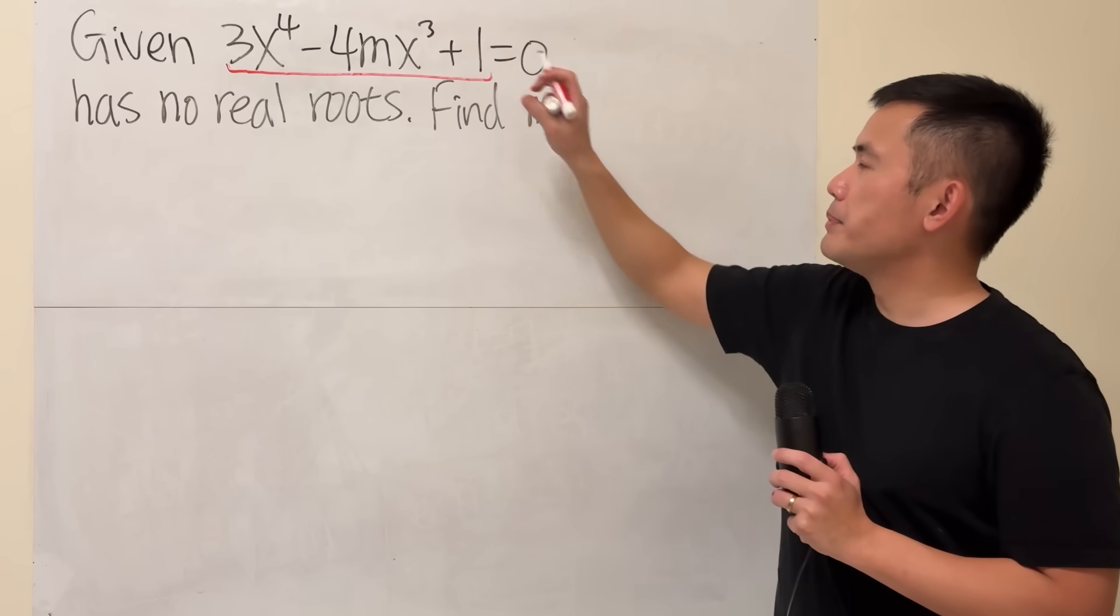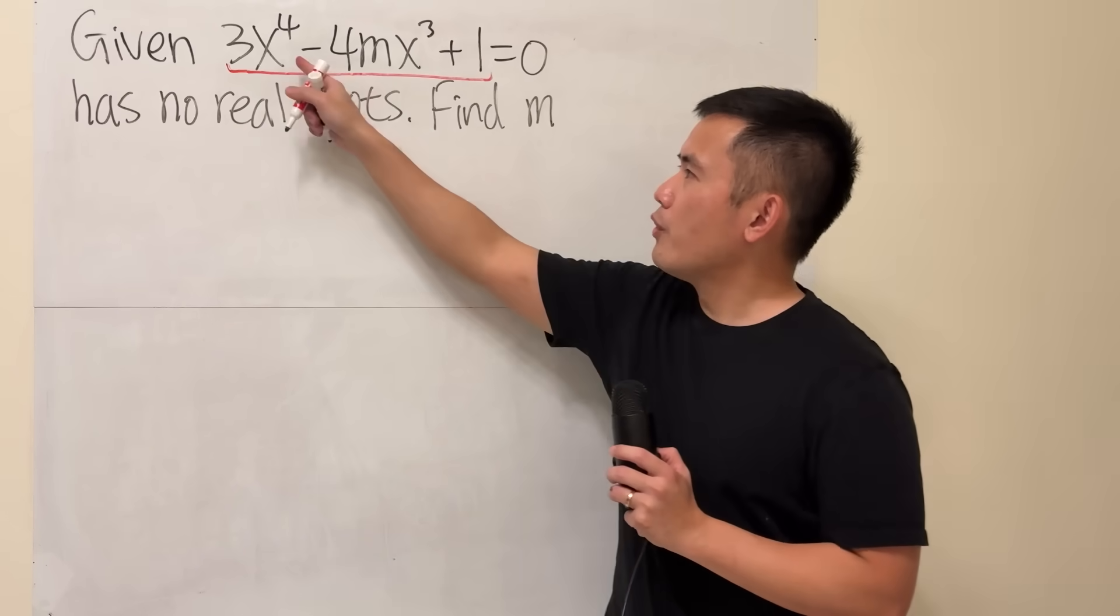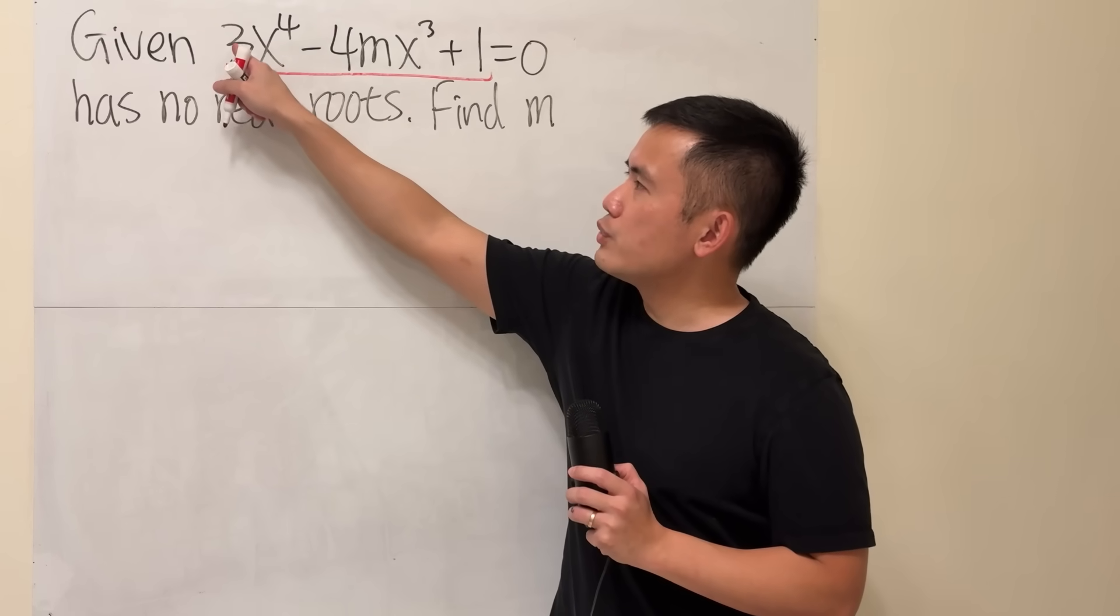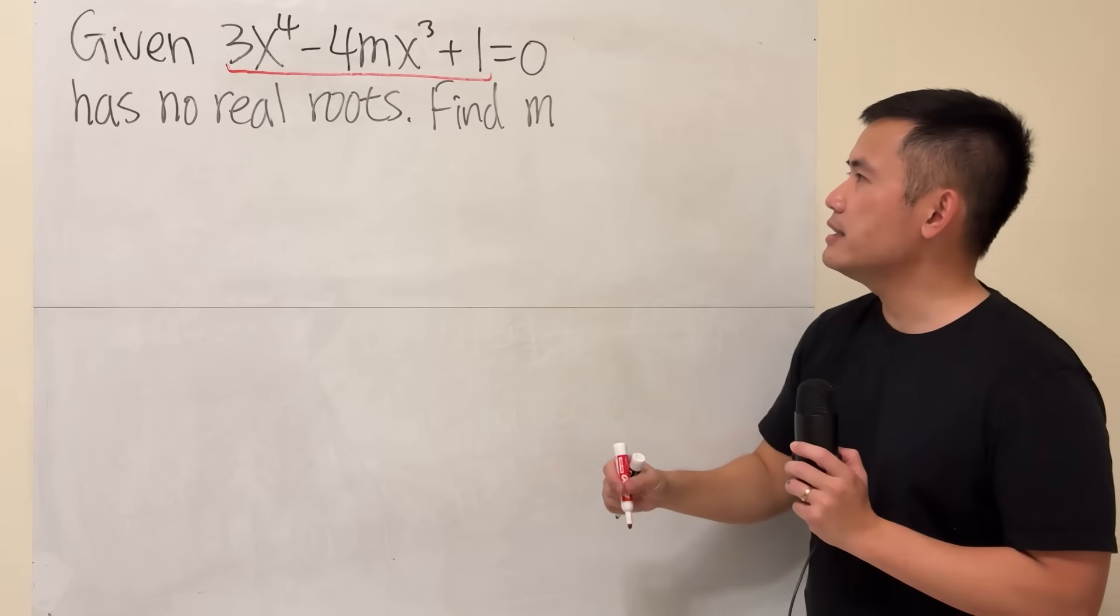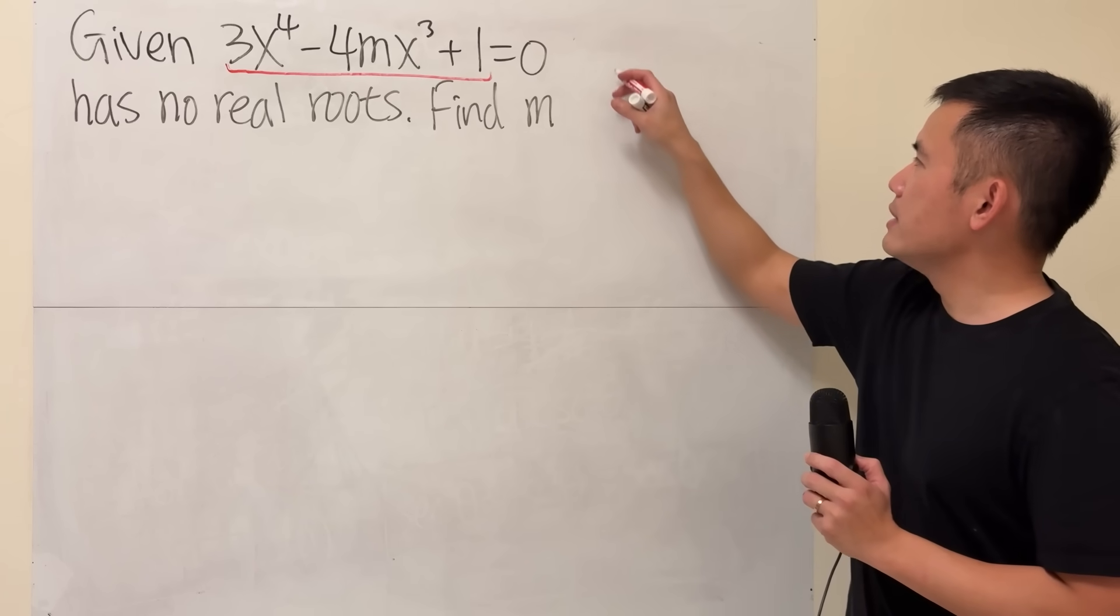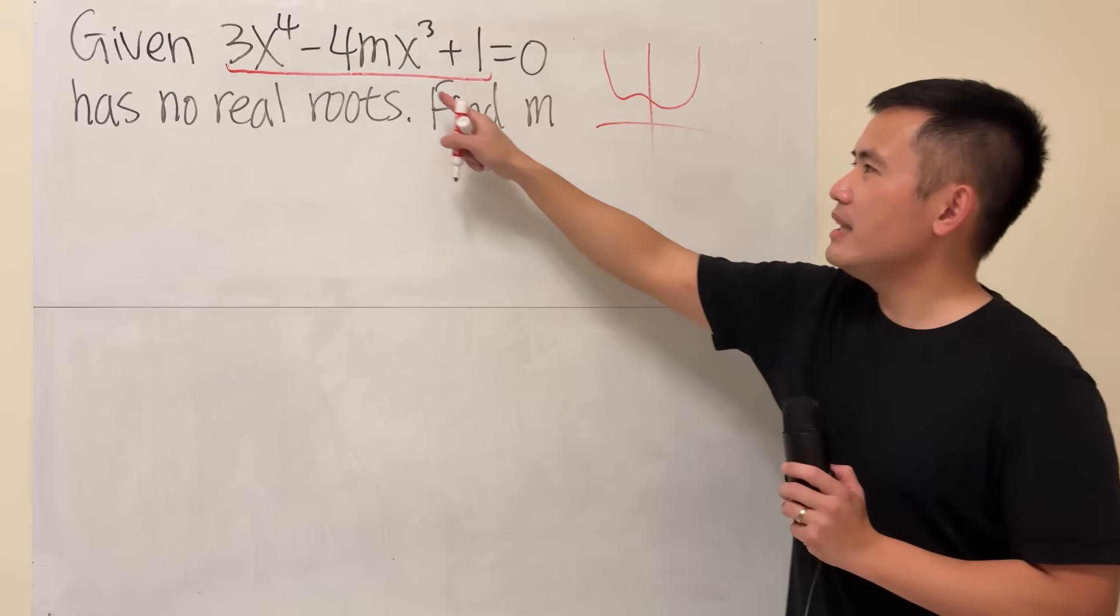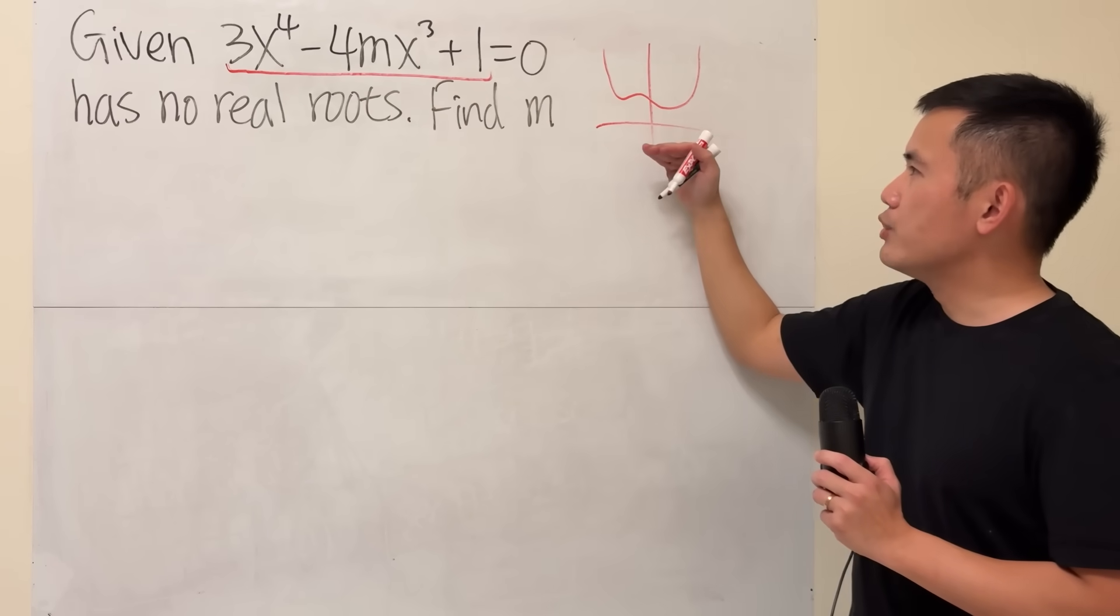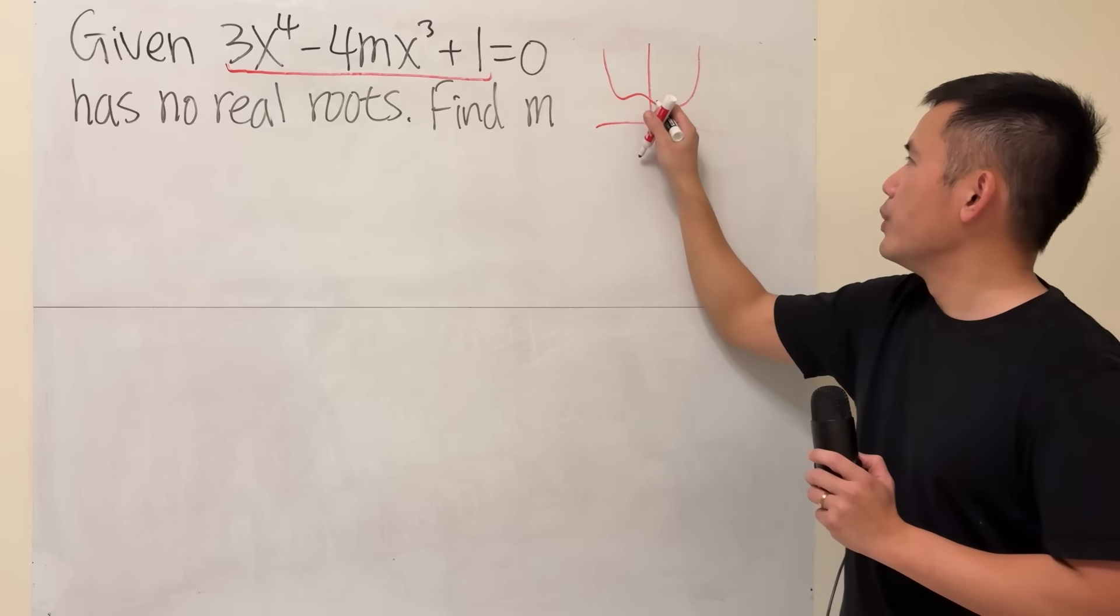Here's the idea: if you call this to be our function f of x, then think about the graph of it. For a fourth power where the coefficient is positive, we know that it's going to be opening upward in general. The graph of it is going to be something like this, and it depends on the m value. It could be going up or down, and this is plus 1 already so this right here is going to be at 1.